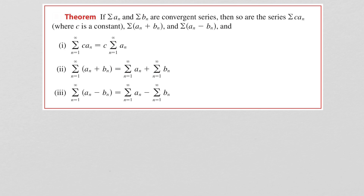Finally, when you have converging series sum of a_n and sum of b_n, you have the following properties: the sum of c·a_n equals c times the sum of a_n; the sum of (a_n + b_n) equals the sum of a_n plus the sum of b_n; and the sum of (a_n − b_n) equals the sum of a_n minus the sum of b_n. These intuitive properties hold only when both series are convergent.